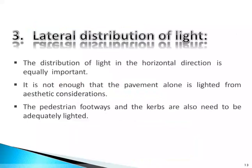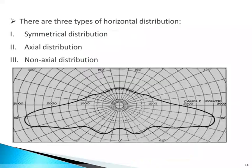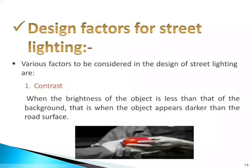The lateral distribution of light — distribution in the horizontal direction — is equally important. It is not enough that the pavement alone is lighted; from an aesthetic consideration, the pedestrian footways and the curbs also need to be adequately lighted. There are three types of horizontal distribution: symmetrical distribution, axial distribution, and non-axial distribution.